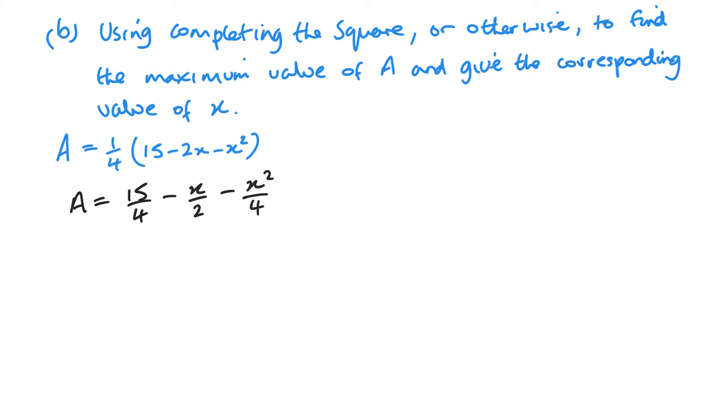So all I'm doing, first of all, is I'm just multiplying everything through by that quarter. So 15 over 4, the minus 2X over 4 becomes minus X over 2, and minus X squared over 4 there. Now, when I differentiate, so dA by dX, the constant will become 0.